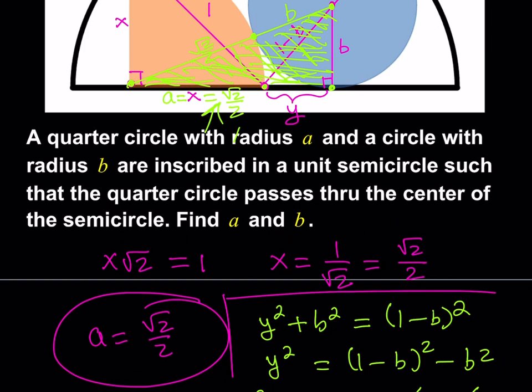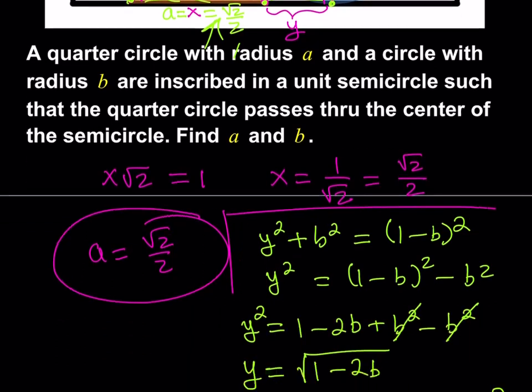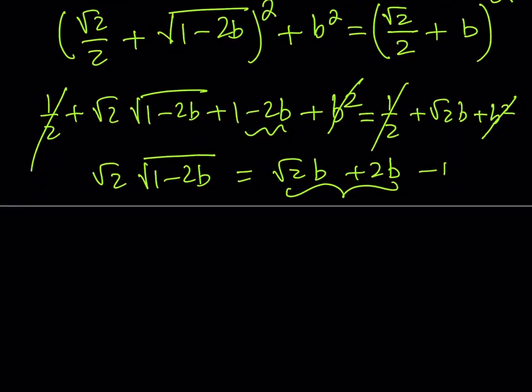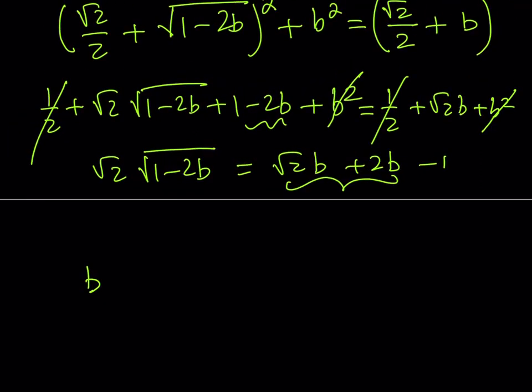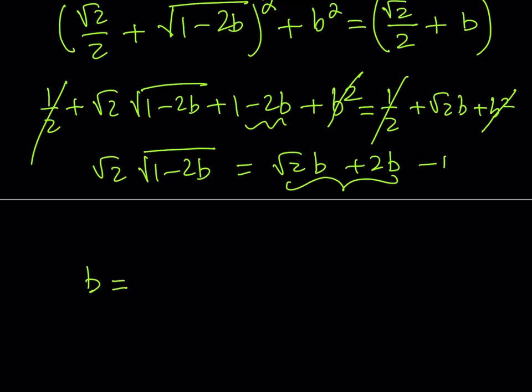This is how we solve it. First, we find a because it's easier. Don't get confused by x, by the way—a is x, same thing. Then finding b is the next step, and we found it. Well, at least we got an equation. I'm going to spare you the trouble and give you the value of b for free. If you solve this equation,